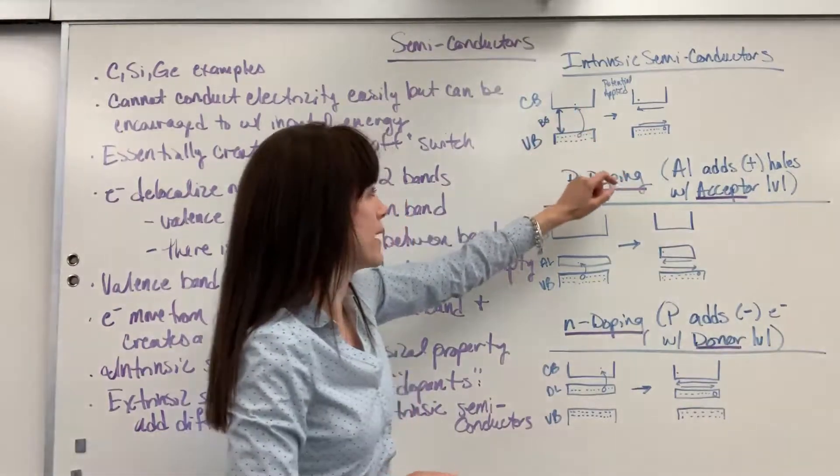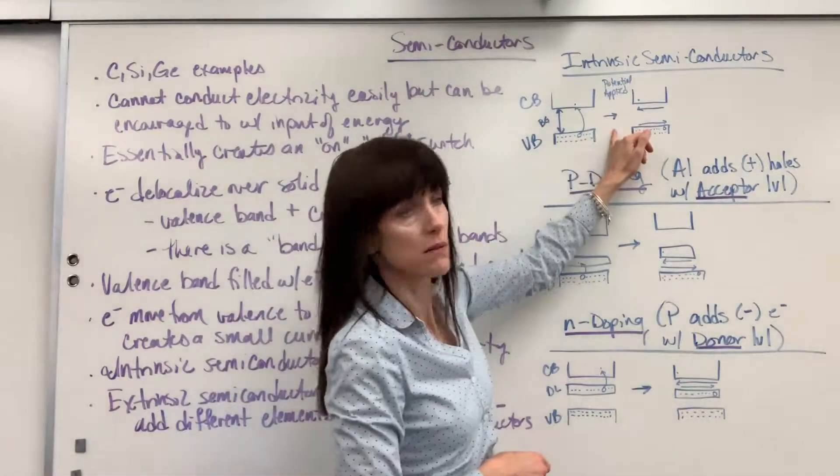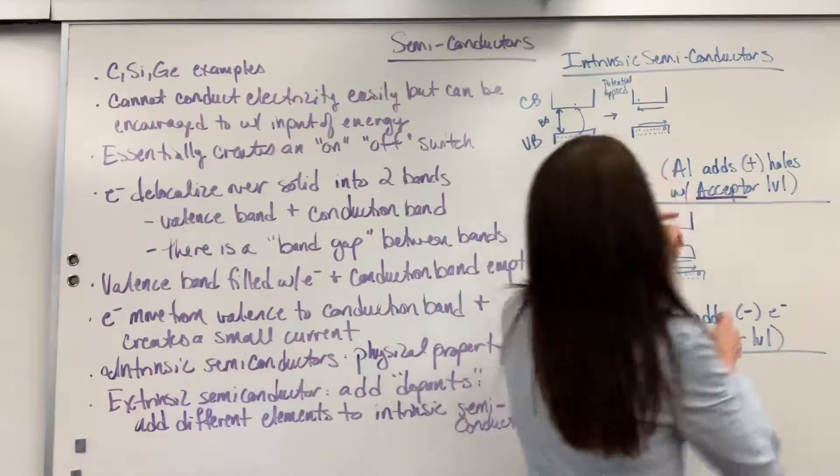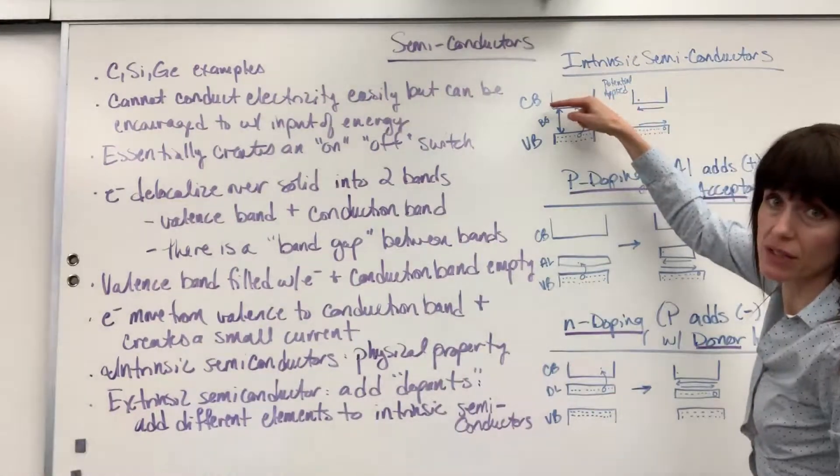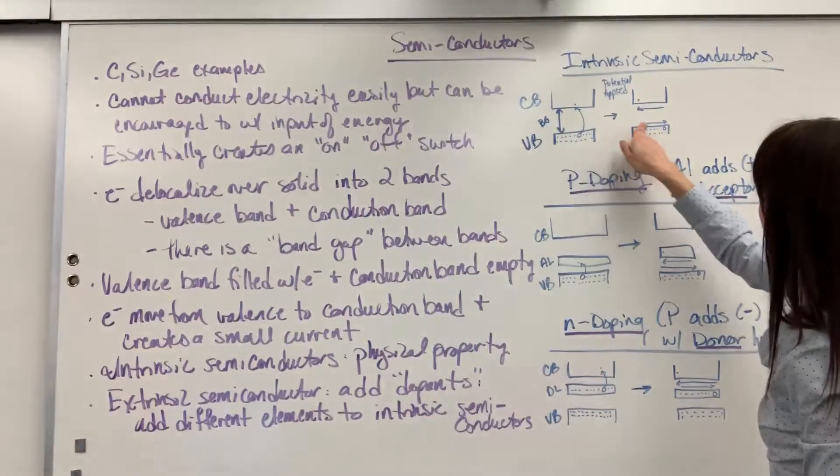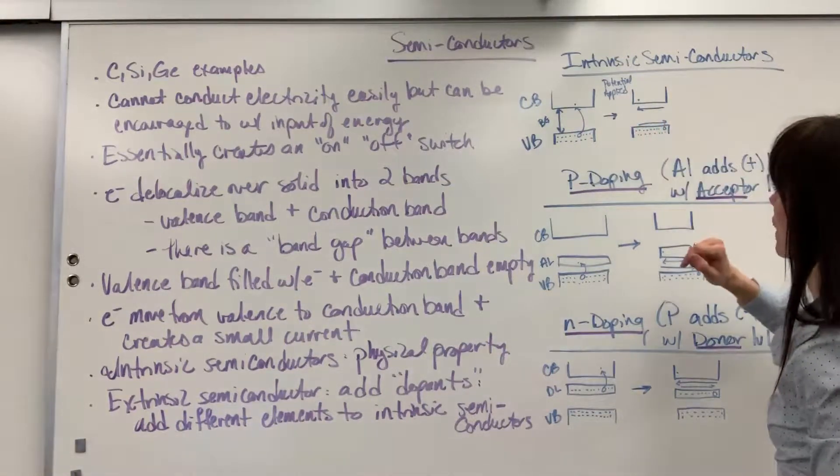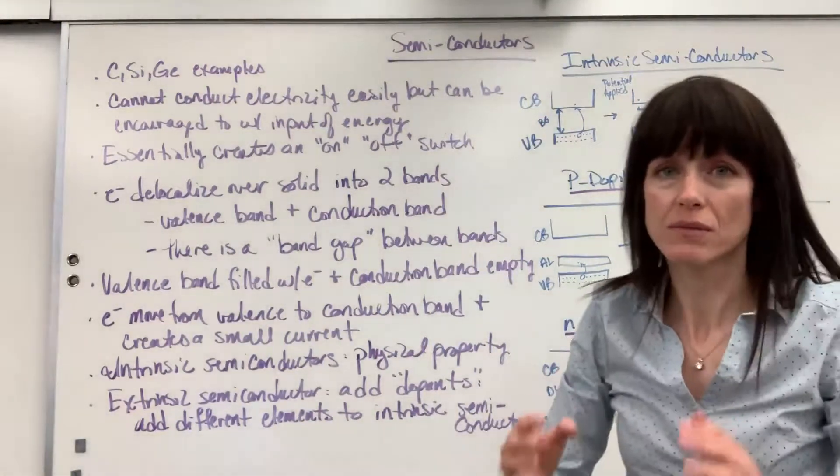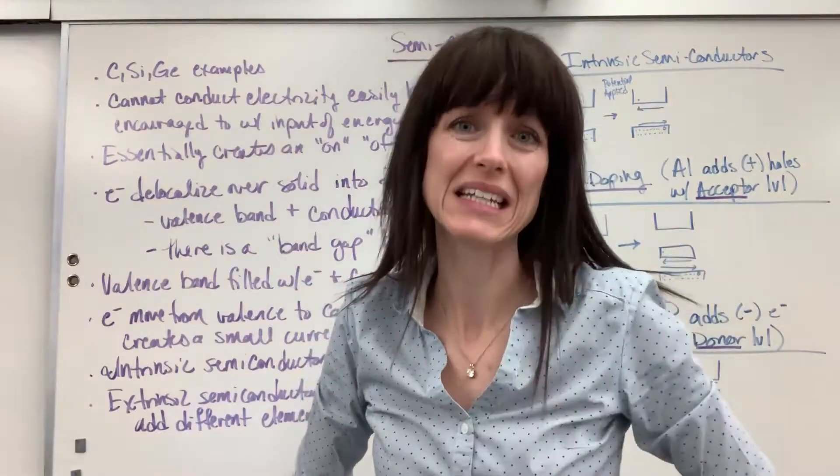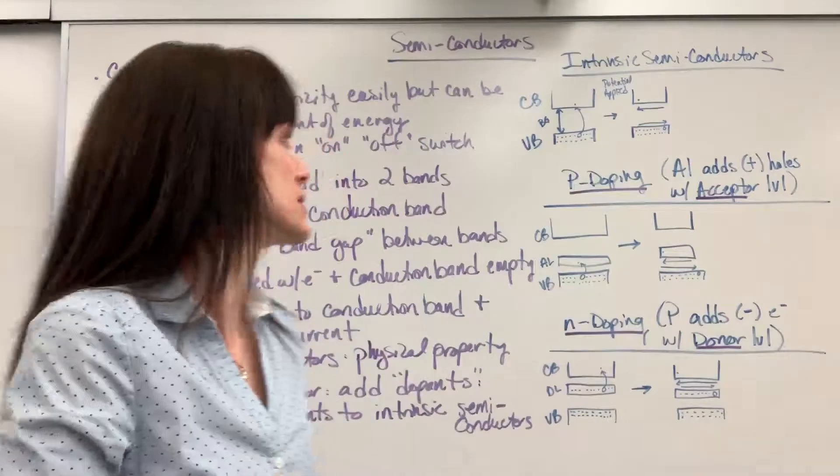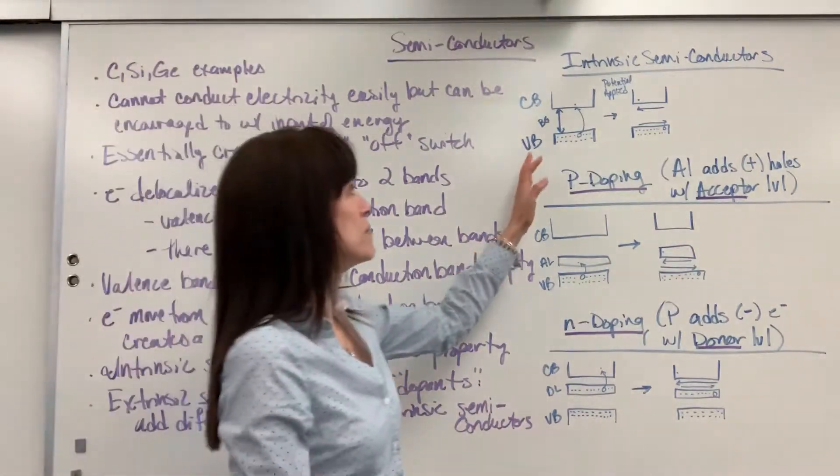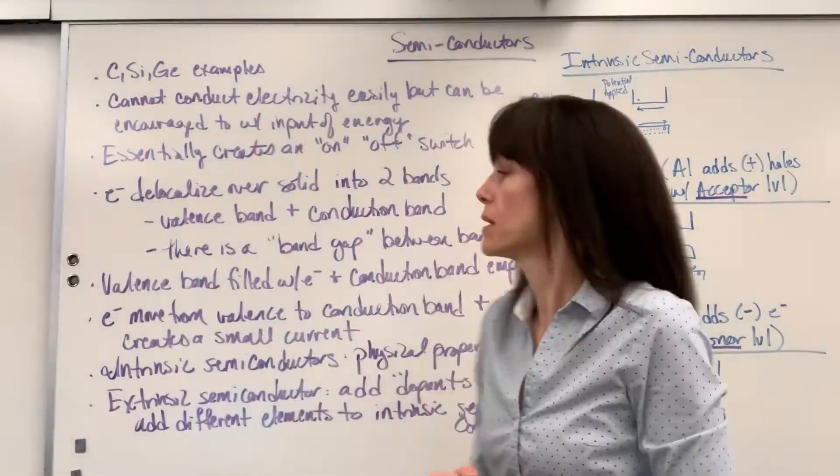The electron moves from the valence band to the conduction band. Now when it jumps to that conduction band, so we've applied this little current right here. Notice the electron is going to travel in that direction, the left direction, and the hole travels in the right direction. That electron moving creates a tiny, tiny bit of current. And it's the current that we're interested in. So that's the very, very basic what happens with semiconductors.